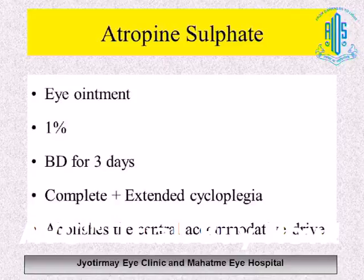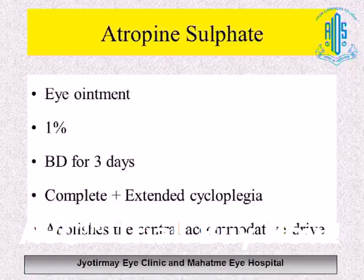The cycloplegic agent we strongly recommend is atropine sulfate — either as eye drops for an older child, or preferably as 1% eye ointment used twice a day for 3 days. The reason for 3 days is that you want not only complete cycloplegia but extended cycloplegia, which will abolish the central drive to accommodate. Once that central drive is gone, whatever strabismus remains is the non-accommodative component.